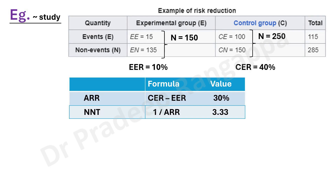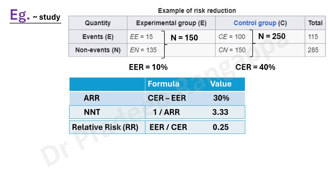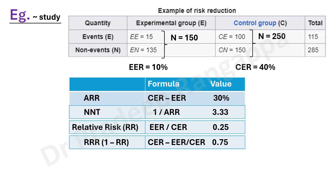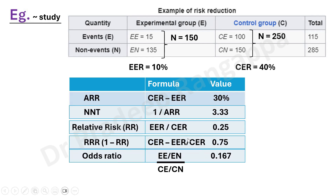With NNT established as 3.3, we now derive related measures. Relative risk = EER / CER = 10 / 40 = 0.25. Relative risk reduction = 1 minus relative risk = 1 minus 0.25 = 0.75. Odds ratio = (EE / EN) / (CE / CN) = (15/135) / (100/150) = 0.167. This is how all these measures are calculated from the same underlying data.